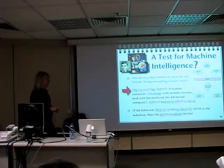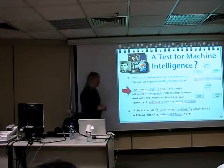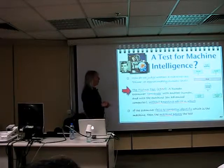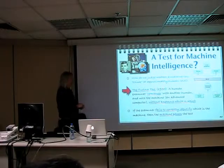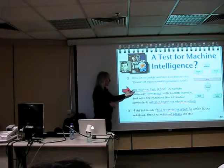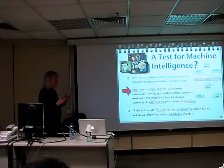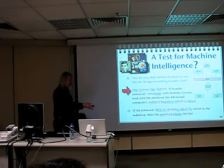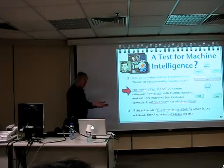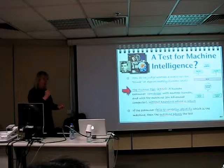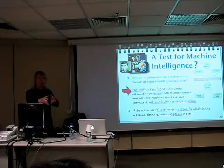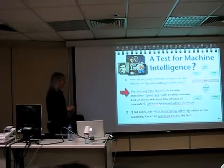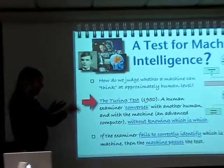Turing knew something funny was going on. He believed that actual human intelligence had some kind of hidden qualities which were hard to measure algorithmically. So he didn't come up with an algorithmic measure of intelligence. He came up with a test — essentially what we would find convincing. If you're interviewing somebody for a job, you wouldn't be happy you'd identified the right person until you've seen and interviewed them. If he's going to tell if a machine is intelligent, he's going to compare it with a human being — that's his litmus test.